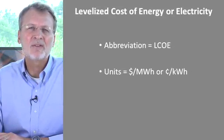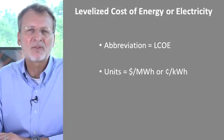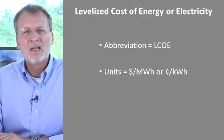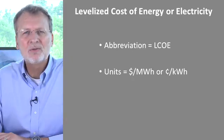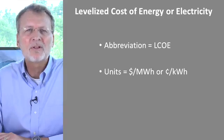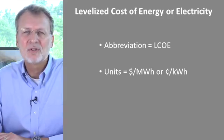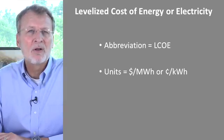However, one can compare overall plant costs by recasting the absolute cost for a plant in terms of what is known as the plant's levelized cost of energy, or LCOE. The LCOE is the plant's cost to generate a single unit of electricity over the lifetime of the plant, and it's generally given in terms of dollars per megawatt hour or cents per kilowatt hour.